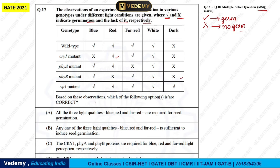Based on these observations, which options are correct? Option A says all three light quantities — blue, red, and far-red — are required for seed germination. But white light also supports germination, and germination still occurs even when far-red is absent, so this is false. Option B says any one of the three light quantities is sufficient to induce seed germination. Looking at every genotype, at least one of these lights is present and sufficient for germination. This is true.